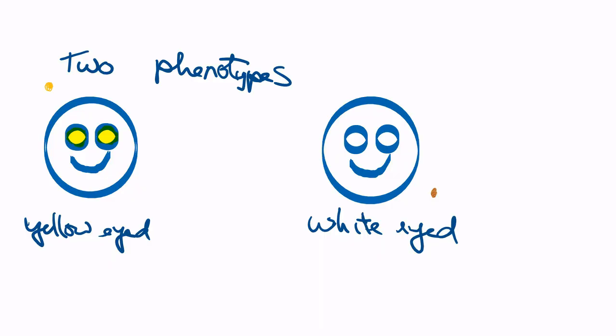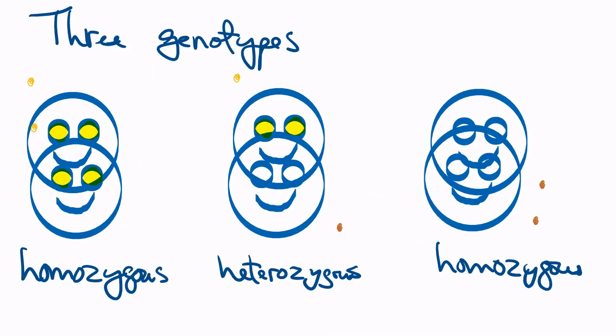We learned previously when we looked at the monohybrid cross that there are two phenotypes that result in the F2 generation. In the case of the phantasma we were looking at, we ended up with yellow-eyed and white-eyed phantasmas. We can see that there are three genotypes that resulted: the homozygous for yellow-eyed, the heterozygous which is also yellow-eyed, and the homozygous for white-eyed.